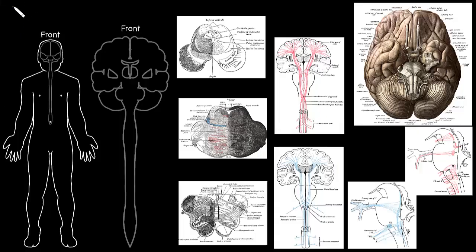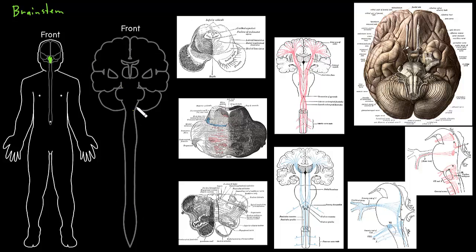In this video, I'm going to talk about the brain stem. We briefly discussed the brain stem when we were talking about the structure of the nervous system as a whole. Recall that the brain stem is right around here, and if we look at our larger drawing of the central nervous system, this is the brain stem right here. The brain stem connects basically all the parts of the nervous system together.